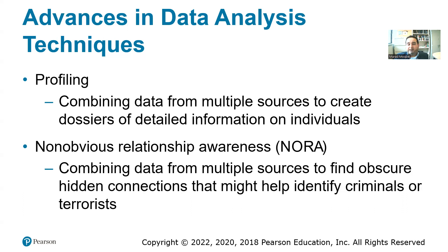There is a system called NORA — Non-Obvious Relationship Awareness — which started being used in 2002. It was originally designed for casinos so they could identify which customers had criminal backgrounds. It combines data from multiple sources to find hidden connections about a particular person, including criminal records. Both government and private organizations use this system.